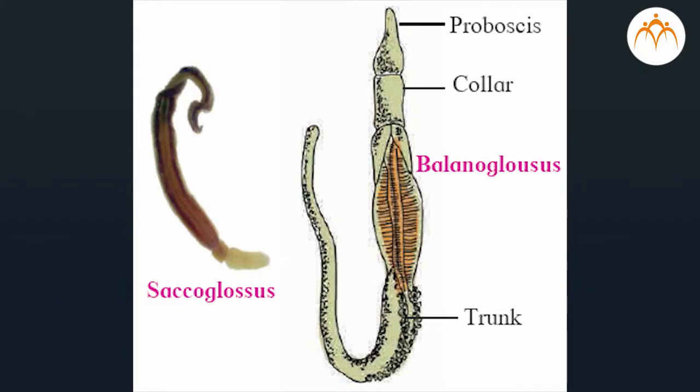Phylum Hemichordata: the body of these animals is divided into three parts — proboscis, collar, and trunk. Notochord is present in the proboscis region only, hence they are called hemichordates. These animals are also called acorn worms. They are marine animals that live in burrows in sand. They have one to many pharyngeal gill slits.